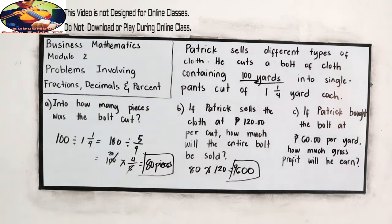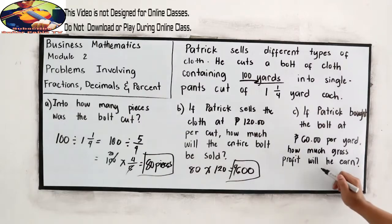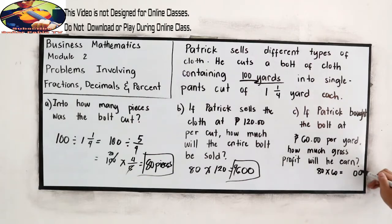Letter C, if Patrick bought the bolt at 60 pesos per yard, how much gross profit will he earn? Let's find his capital first. That is 80 times 60. Two zeros. 8 times 6 is 48.